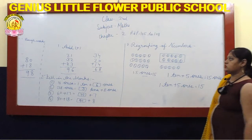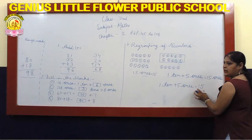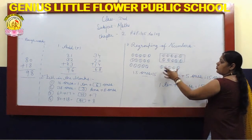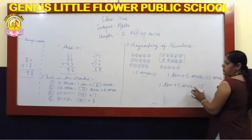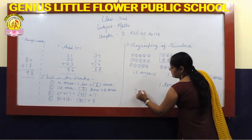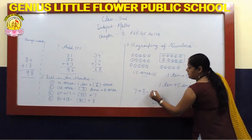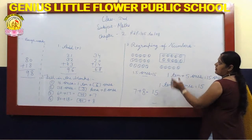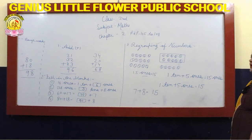Okay students, agar hum iski grouping change kar dete hain tab bhi hamara sum kya aayega? 15 aayega. Agar 5 balls ko upar bana di jayein aur 10 balls ko niche bana diya jayen, tab bhi kitna aayega hamara sum? 15 aayega. Agar balls ko 7 aur 8 mein tod dein, tab bhi 15 hi aayega. Sum hamara same rahega — agar hum grouping change bhi kar dein, tab bhi hamare sum par koi effect nahi padega.